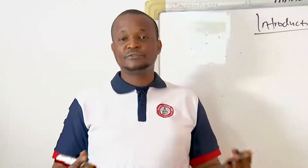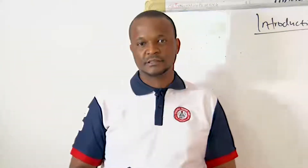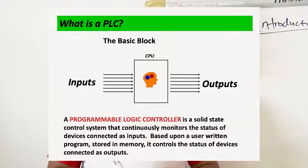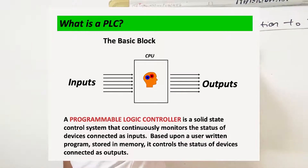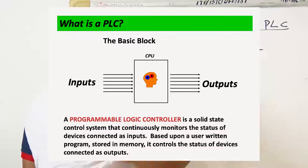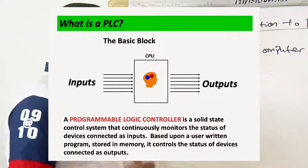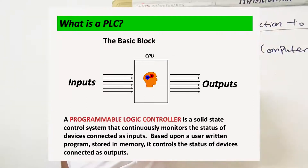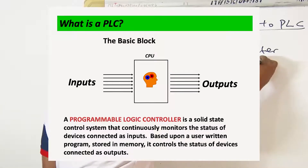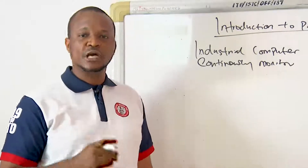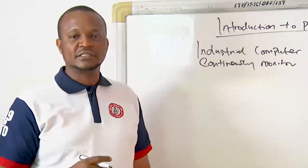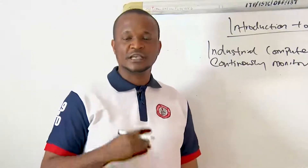What then is a PLC? Many refer to PLCs as an industrial computer. Some may refer to it as a solid-state device. There are a lot of definitions about PLC when you Google it. I define a PLC as an industrial computer or a solid-state device which continuously monitors the state of input and output devices connected to it, and based upon the written user program, it controls the status of the devices connected to it, or controls a machine or process.